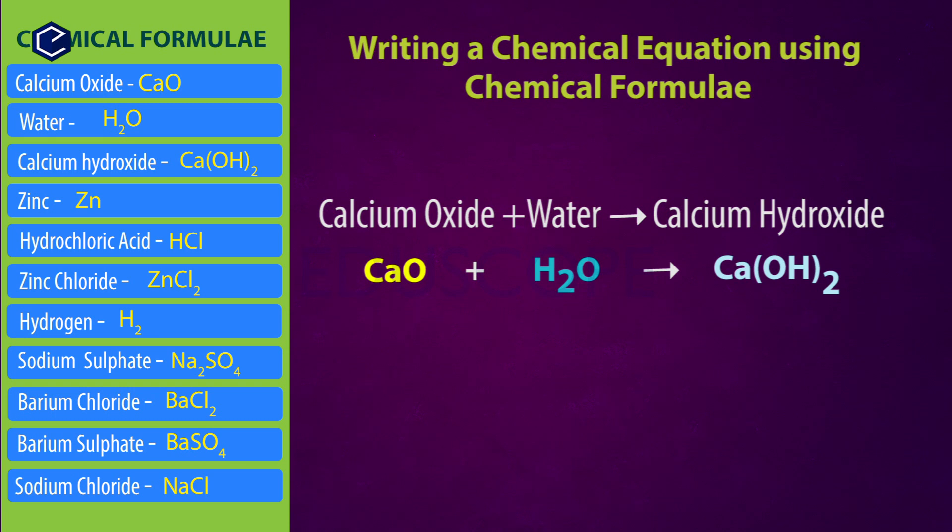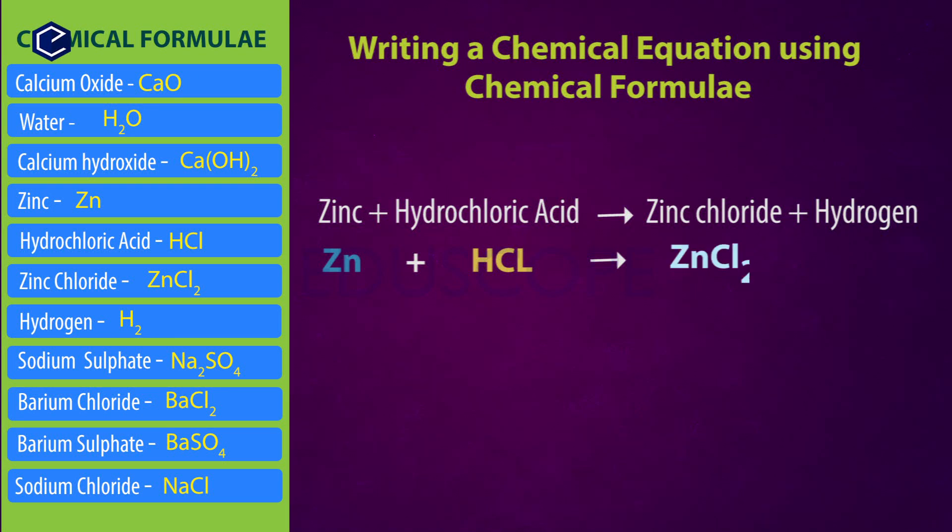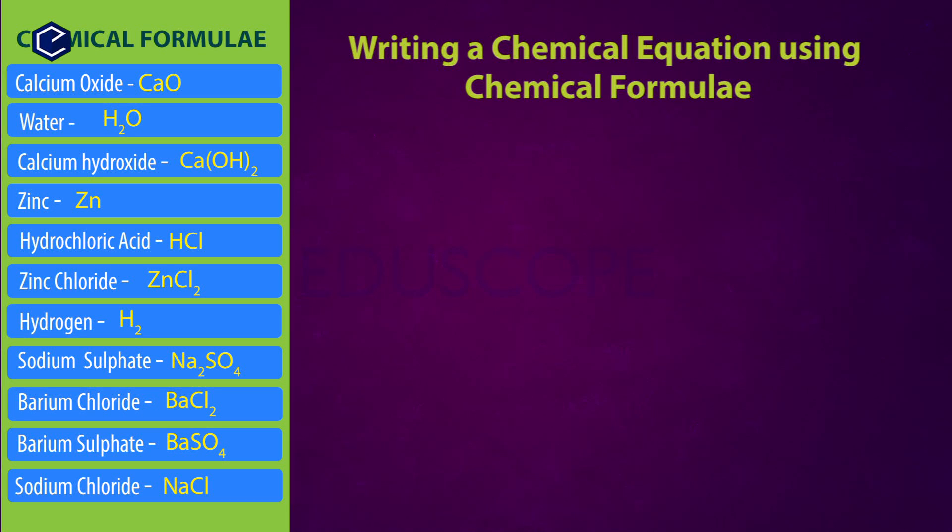Next chemical reaction equation: zinc reacts with hydrochloric acid and gives rise to zinc chloride and hydrogen. Zinc formula is Zn. Hydrochloric acid chemical formula is HCl. So Zn plus HCl gives rise to zinc chloride. Zinc chloride chemical formula is ZnCl2. ZnCl2 plus hydrogen chemical formula H2. So Zn plus HCl gives rise to ZnCl2 plus H2.